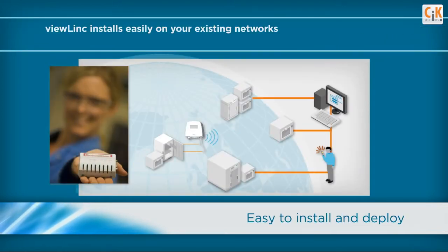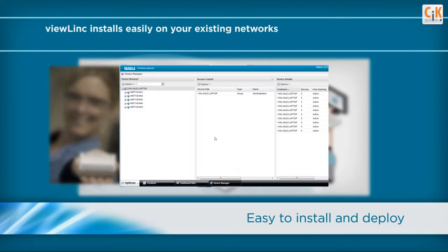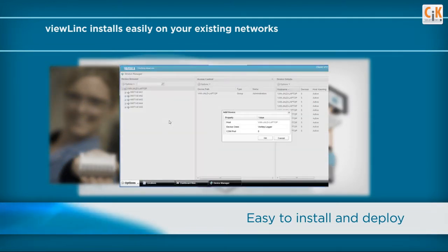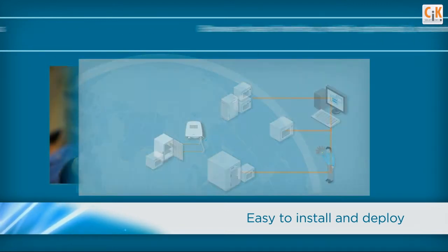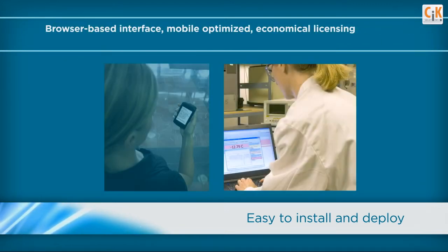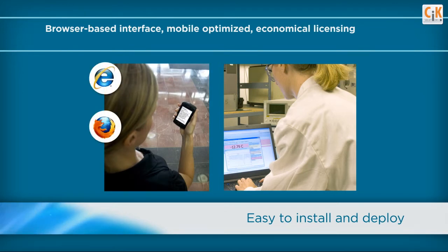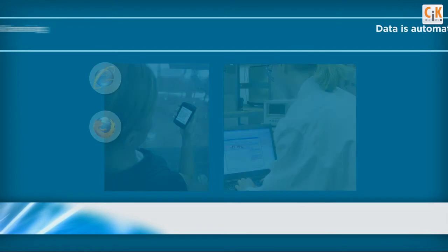ViewLink is designed to be easy to install and deploy on your existing networks with any combination of connectivity methods — wired, powered over Ethernet or wireless. The ViewLink monitoring interface is browser based, accessible by mobile devices and site licensed for an unlimited number of users and devices without additional license fees.